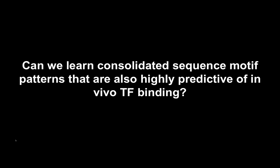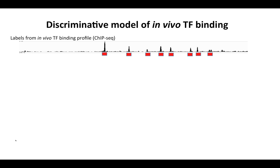So the question is, can we learn consolidated sequence patterns that are also highly predictive of in vivo transcription factor binding? The way we're going to do this is we're going to train a deep learning model to predict transcription factor binding well, and then we're going to interpret the model to understand what it learned.